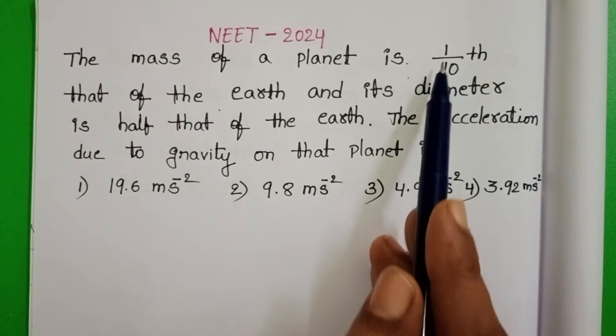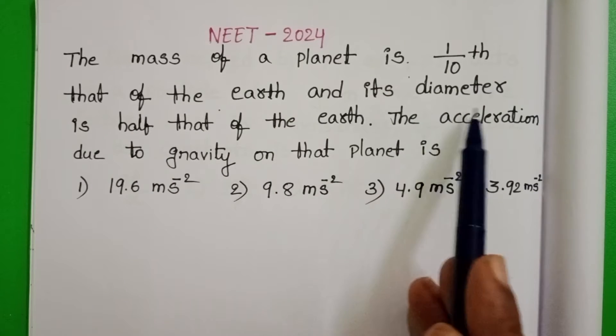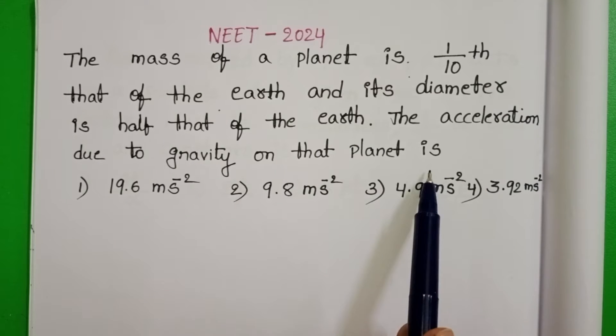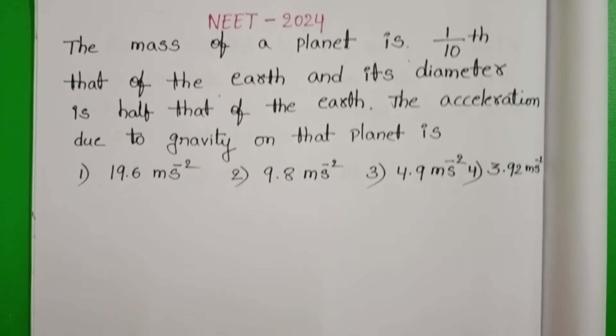The mass of the planet is 1 by 10th that of the earth and its diameter is half that of the earth. The acceleration due to gravity on the planet is.